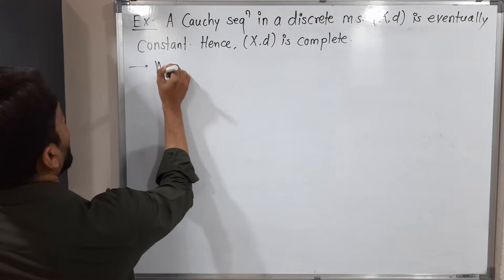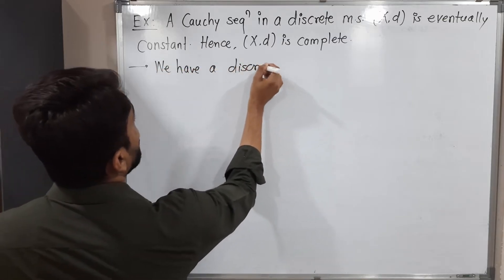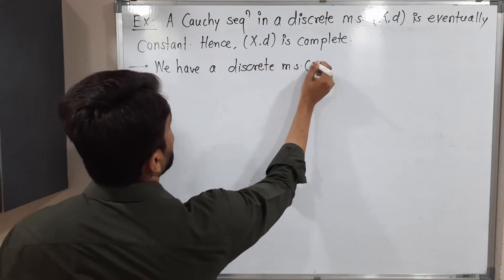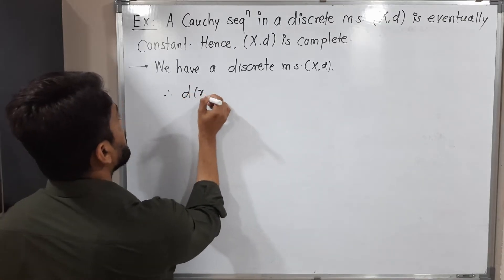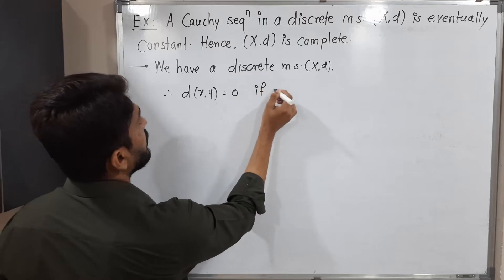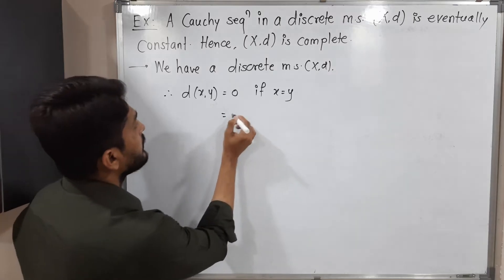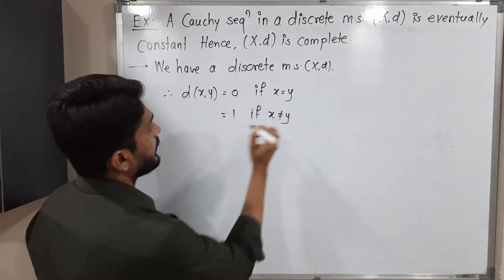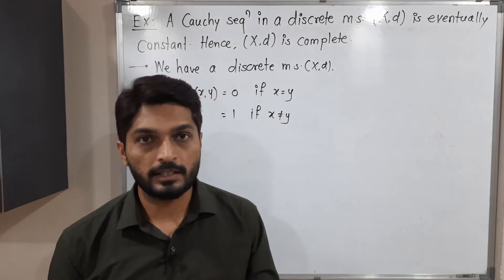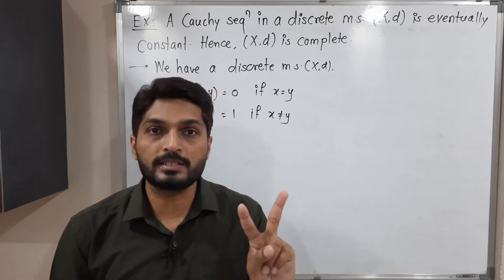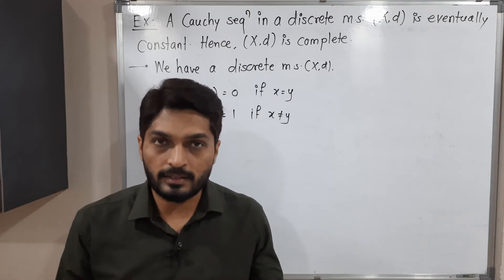We have a discrete metric space X_d. The definition of discrete metric is: d(x, y) = 0 if x and y are the same — two points are same, distance is 0. It is equal to 1 if x is not equal to y, that means if two points are distinct, the distance is 1, which is fixed. So in the discrete metric space we have just two distances only: 0 and 1.